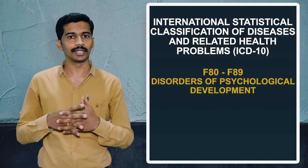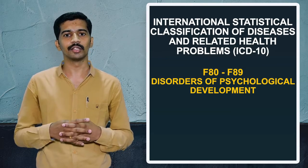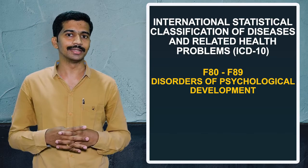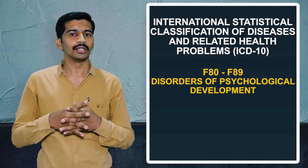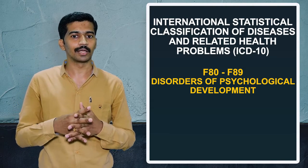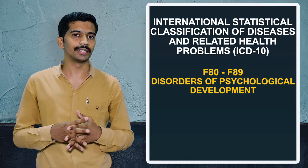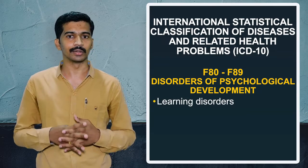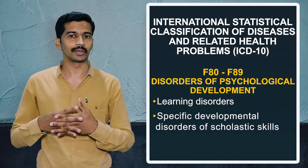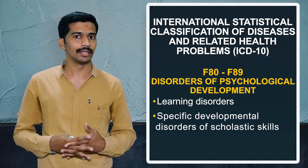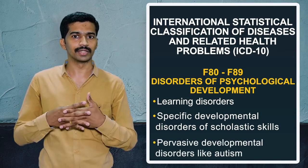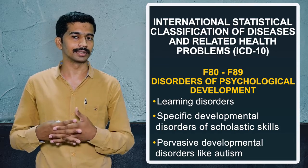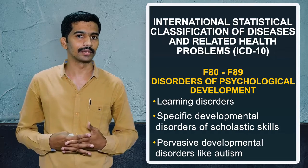The next chapter, F80 to F89, is related to disorders of psychological development. Here we can see various types of learning disorder, problems related to scholastic skills, and the pervasive developmental disorder, which includes autism and others.